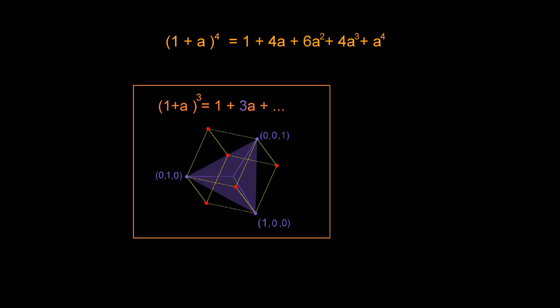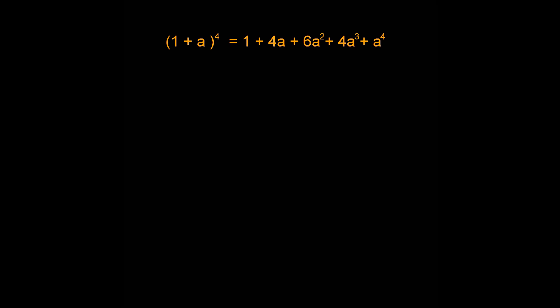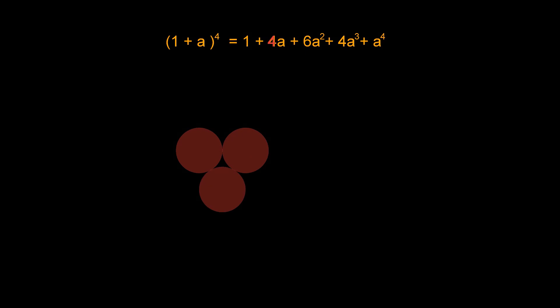When our cube was three dimensional, the coefficients of the algebraic terms formed 2d planes but now our cube is four dimensional. So we can expect 3d objects now. For example, to imagine the 3d object formed by the coefficient of a which is 4, think of three bowling balls in a triangle and then imagine putting a fourth bowling ball on top of them and then joining their centers. This 3d object is called a tetrahedron.